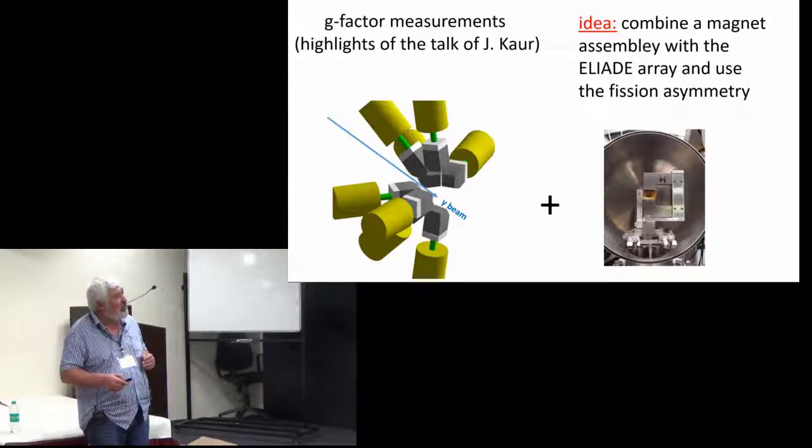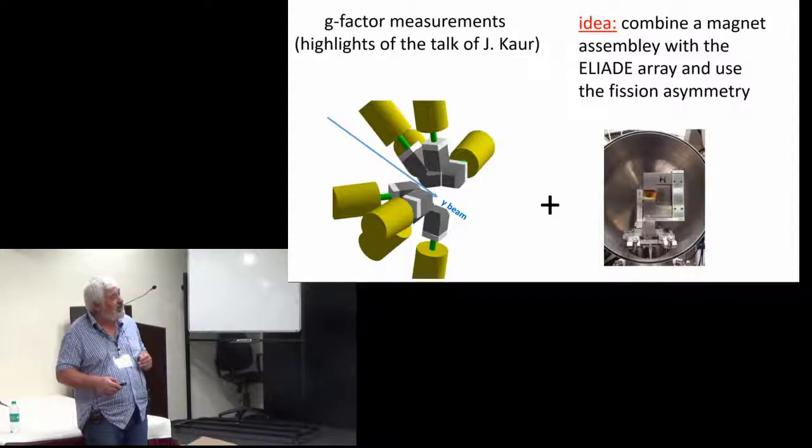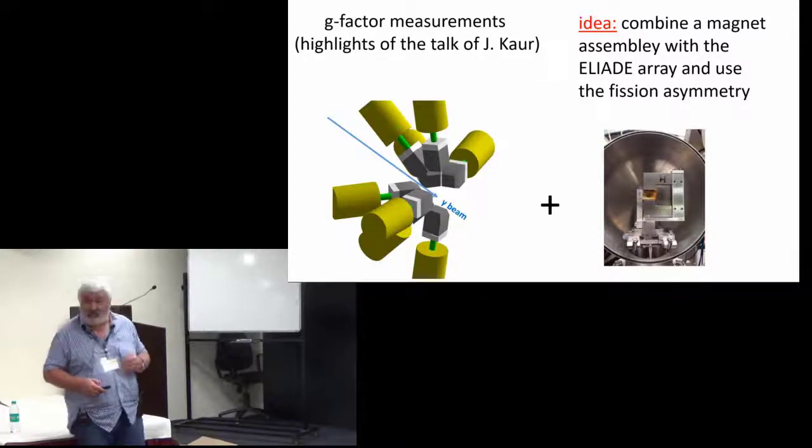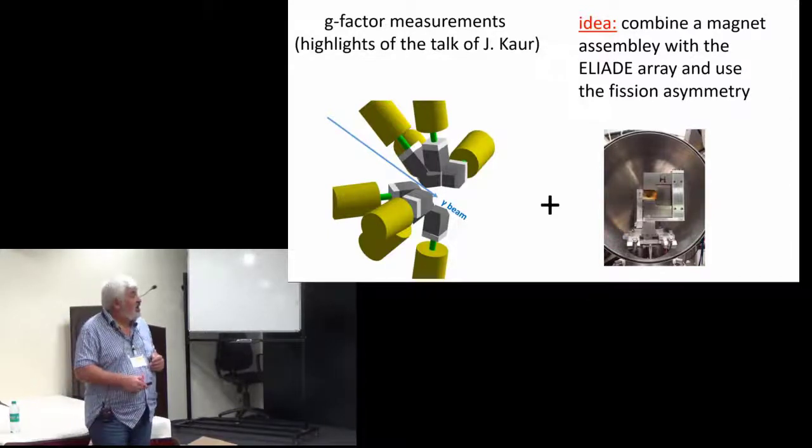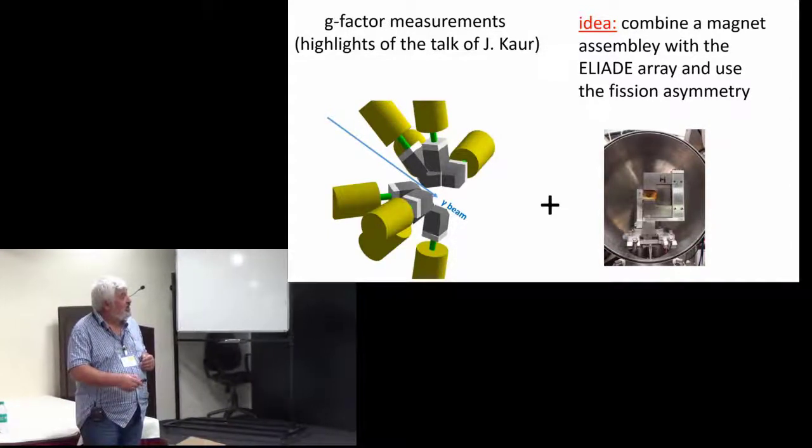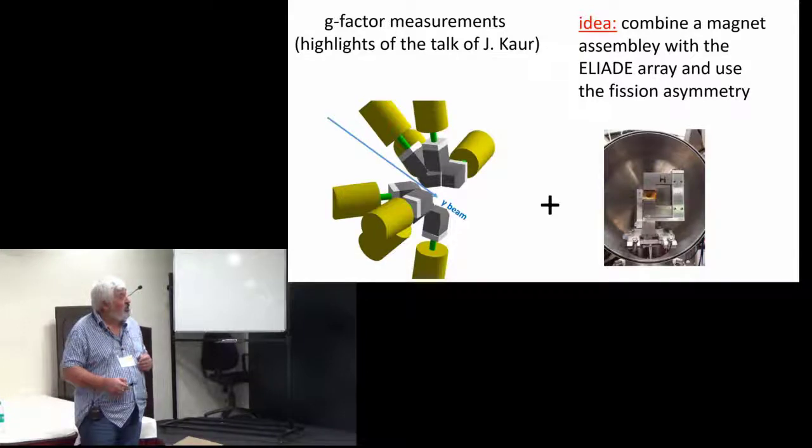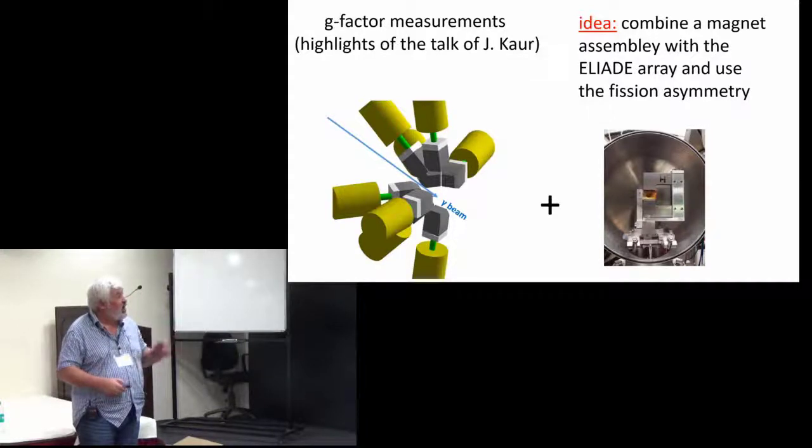The idea is to combine a magnet assembly with the ELIADE array and use the fission asymmetry to measure g-factors. The ELIADE array has large volume germanium detectors which are in good positions for such measurements.